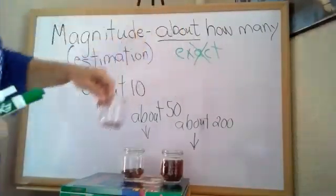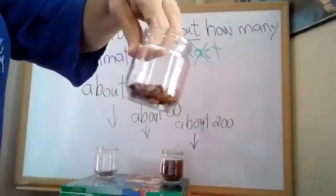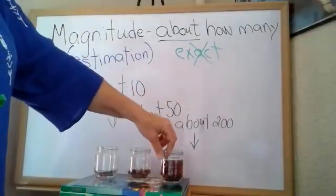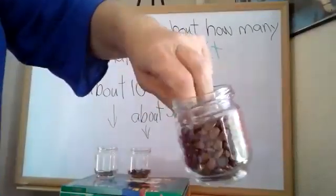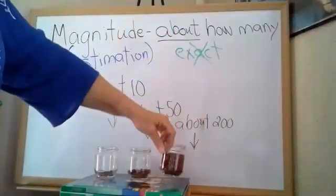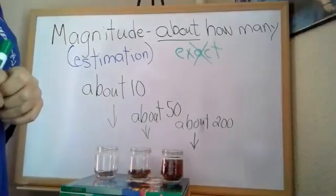This one has about 10, this one has about 50, a little bit harder to count. The last one is loaded with beans, so loaded with beans, this one probably has about 200.